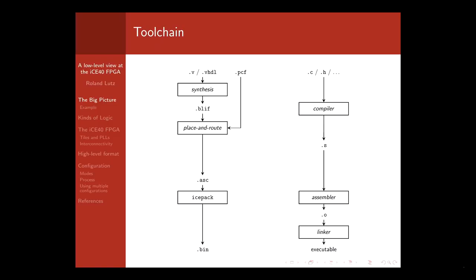In detail, you start with a hardware description normally in VHDL or Verilog. Then process this in a step called synthesis, which results in a number of logic primitives readable by the computer. Then take this file and a .pcf file in the place-and-route step, which maps the design onto the real hardware in the FPGA. The result is an ASCII representation of the bitstream — basically a text file with zeros and ones — which is then translated into the binary bitstream for the FPGA.